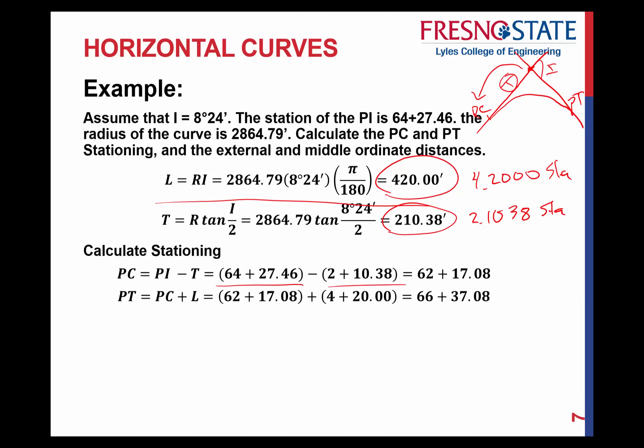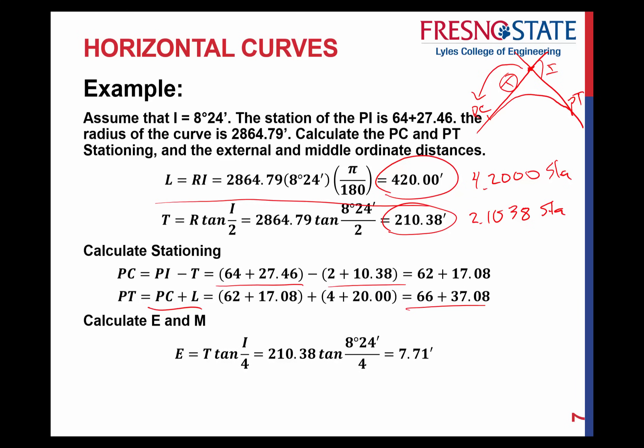To calculate the PT — meaning PT back along the curve — take the PC station plus the length of the curve. The curve length is 420 feet. Adding that to our PC station gives us a PT back station of 66.3708. For the external ordinate, plug in the formula using tangent distance times tangent of I over 4, giving 7.71 feet. The middle ordinate is calculated the same way — plug in the known values. Note that you couldn't calculate the external or middle ordinate without first calculating the tangent distance.